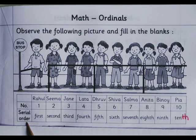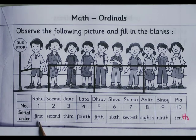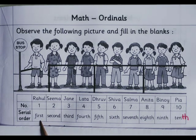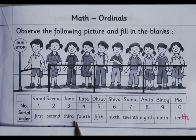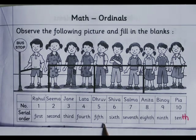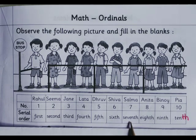Serial order wise: 1st, 2nd, 3rd, 4th, 5th, 6th, 7th, 8th, 9th, 10th.